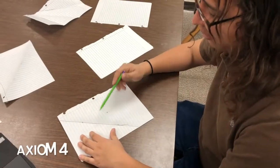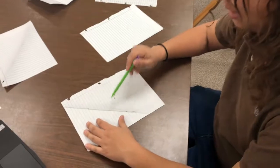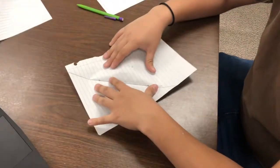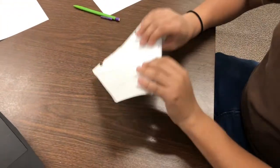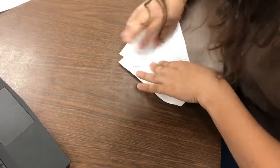Axiom four. Given a line and a point, there is a unique perpendicular fold that goes through this line and this point. Demonstrated as such. My hair weave. Okay, just got it. There we go.